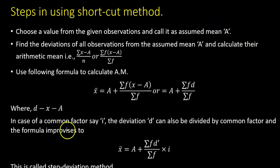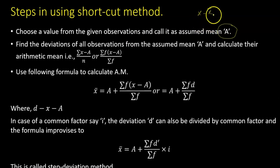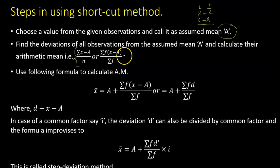What are the different steps involved in this method? First, in the entire dataset you find a value sitting in the center and call it the assumed mean — generally the value falling somewhere in the center. Then you calculate x minus A, the deviation from the assumed mean. Then you find the average of those deviations. If you are using a frequency distribution, you can use this particular formula to find the deviation and their average.